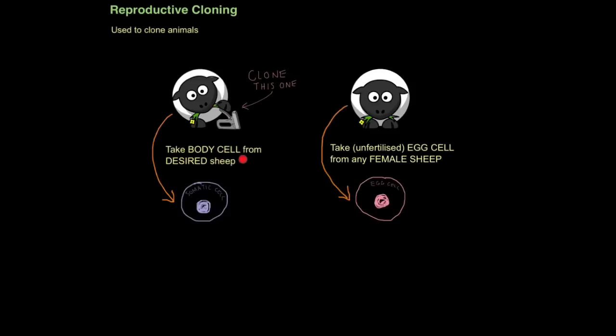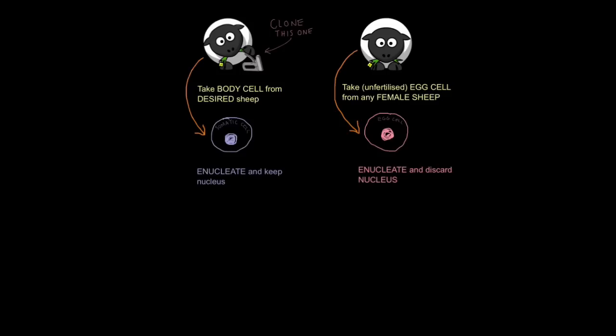So the first step is take a body cell or somatic cell, same thing, from the desired sheep. And that's because the nucleus of a body cell is diploid. It contains all the sets of chromosomes you'd expect, and therefore all the genes that instruct the body how to make that specific sheep. We'll also need to take an unfertilized egg cell from any female sheep. We will then need to enucleate the body cell. That means remove the nucleus. But we want to keep that nucleus because it contains all that vital information instructing the body how to make that sheep.